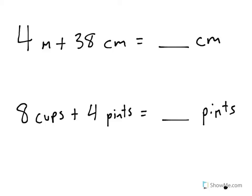Now, with measurement, it's always possible to add together two measurements that are currently in different measures. So, for instance, at the top we could see 4 meters plus 38 centimeters, and we want to know how many centimeters that is total.